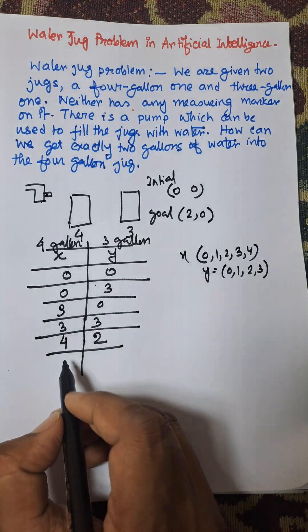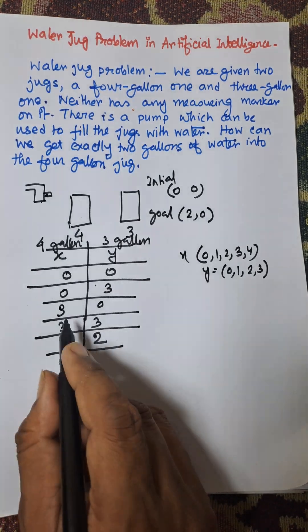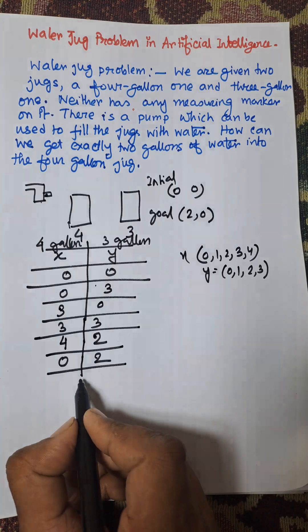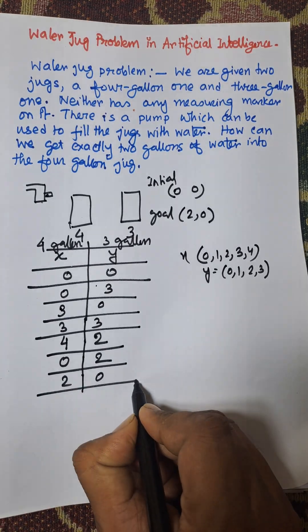Now empty the 4-gallon jug - 0,2. Finally, transfer the 3-gallon jug into the 4-gallon jug - 2,0. So we can solve the problem.